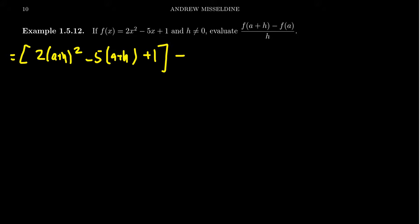And then we're going to subtract from that f(a), which just means you plug in a for each of these x's here, in which case you end up with 2a² - 5a + 1. And this all sits on top of h.